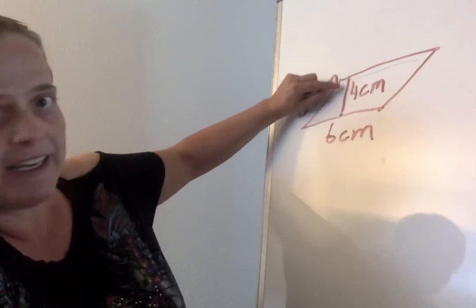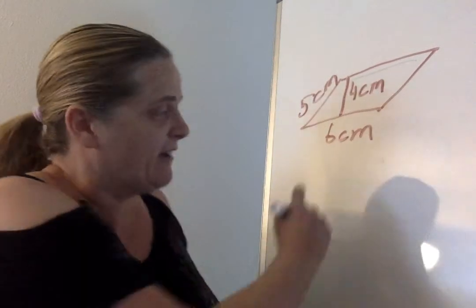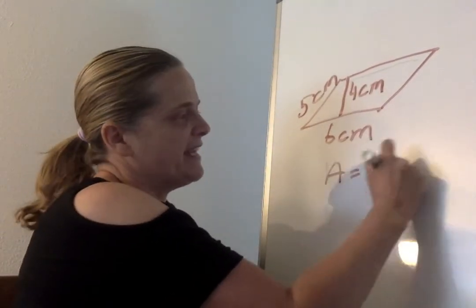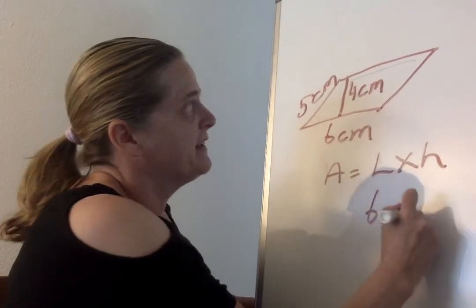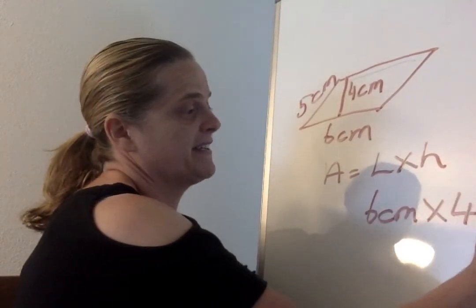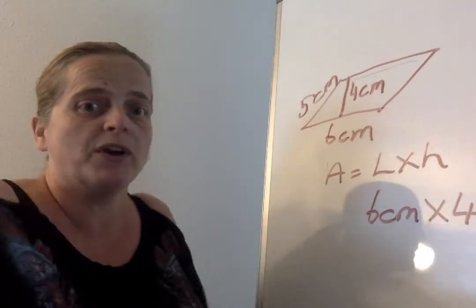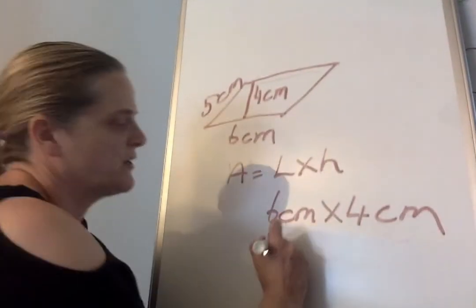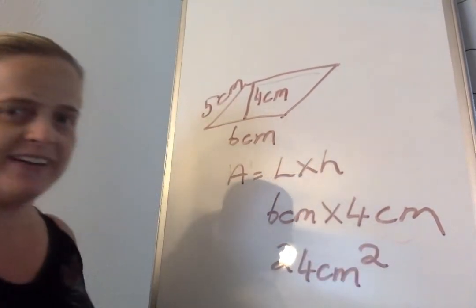And on a test you will see a line or a dotted line down the middle. So, in this example, to find the area, it's still length times height, and the length is 6cm, and the height is 4cm, not 5 as out here. So it's 6 times 4, and 6 times 4 equals 24cm squared, right?